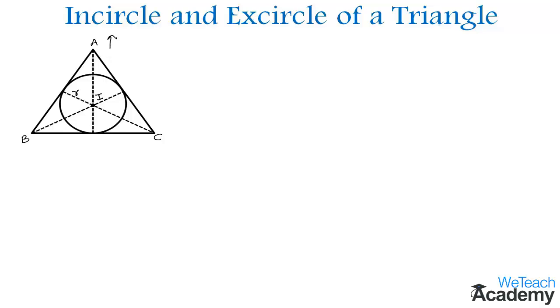Now let us discuss the excircle. Here you can see a diagram showing the circle lying outside the triangle tangent to its side BC and tangent to the extensions of the other two sides AB and AC.